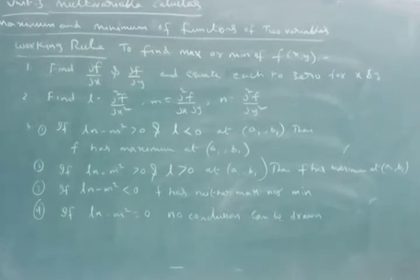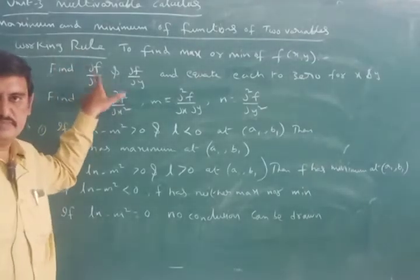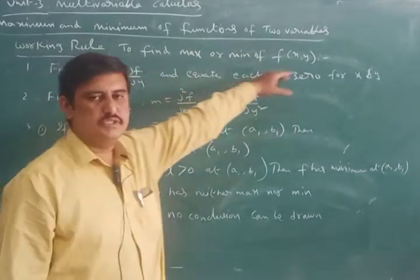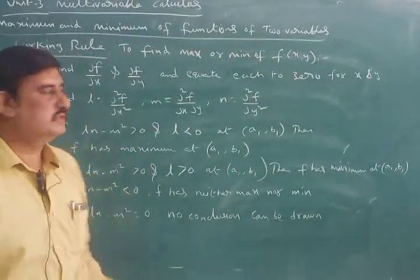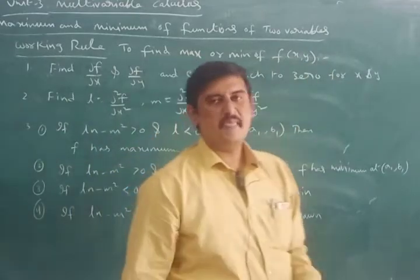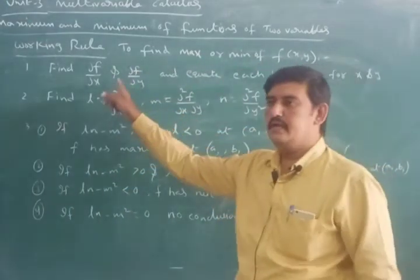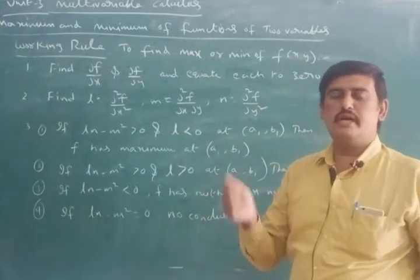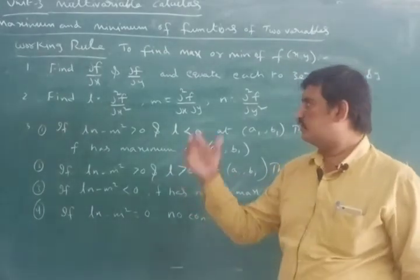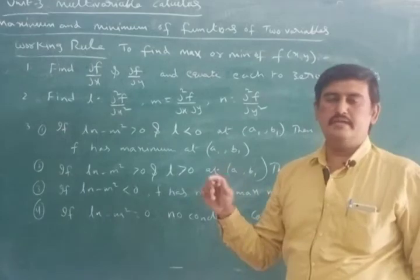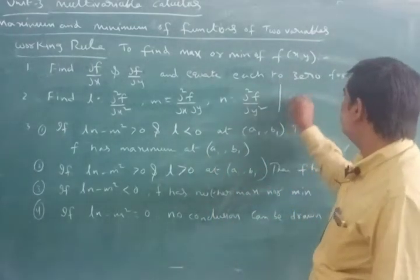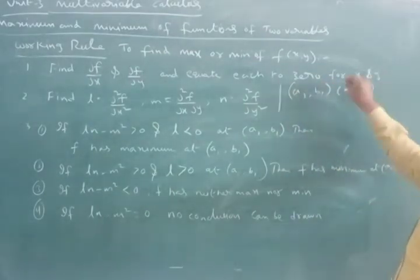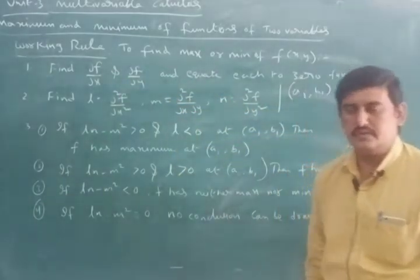First step: find the partial derivative of f with respect to x — that is ∂f/∂x — and the partial derivative of f with respect to y — ∂f/∂y — and equate each to zero to get x and y values. When we equate ∂f/∂x = 0 and ∂f/∂y = 0, we get different x and y values. Those points can be taken as (a₁, b₁), (a₂, b₂), and so on.